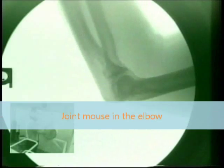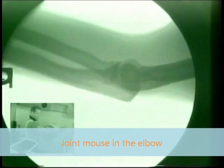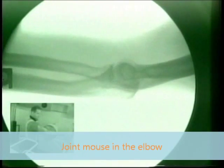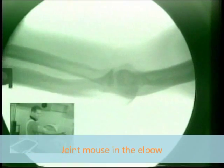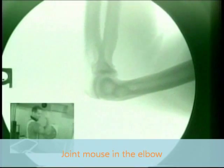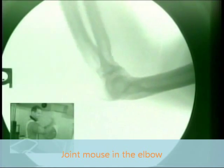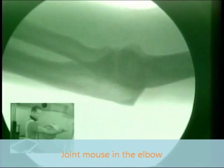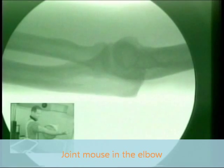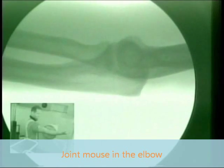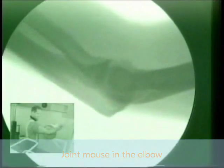An avulsion fracture of the elbow with a joint mouse that disappears into the joint on extension was missed until a digital motion x-ray was performed. Following a simple surgical procedure, the patient can now fully extend his arm without pain.